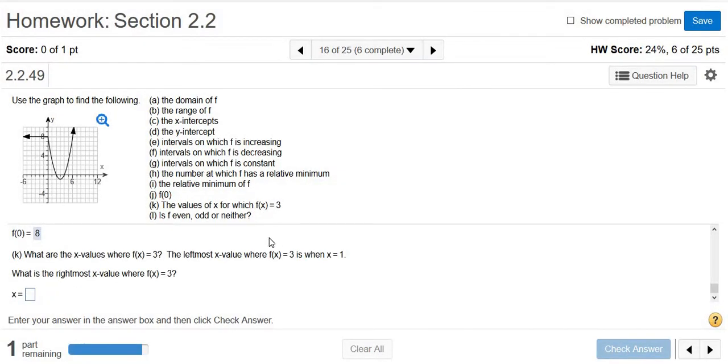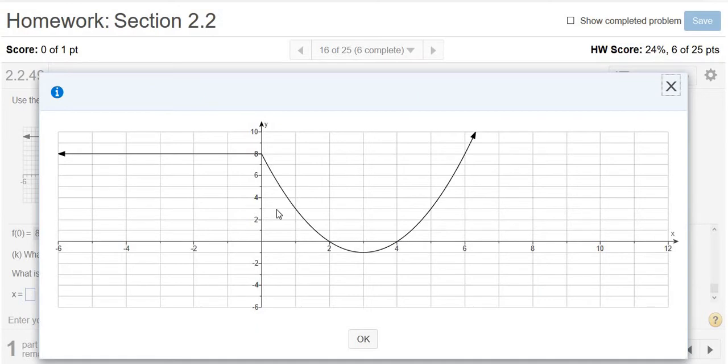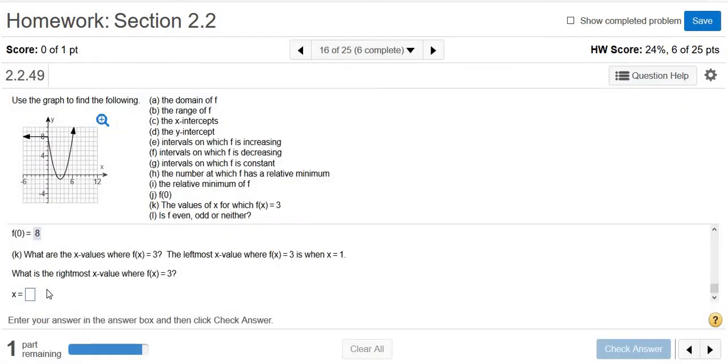The values of x for which f of x equals 3. These are going to be the x-values for which y is equal to 3. I wish I could draw on this, but I can't. Here's y equals 3. The first x-value where y is 3 is 1. The next one is 5. So x equals 3—or y equals 3, rather—is this line. Pretend there's a line here. At y equals 3, x is 1. And at y equals 3, x is 5. So 1 and 5.